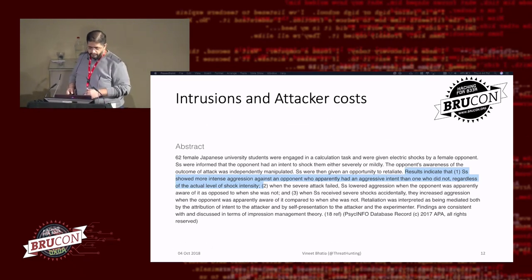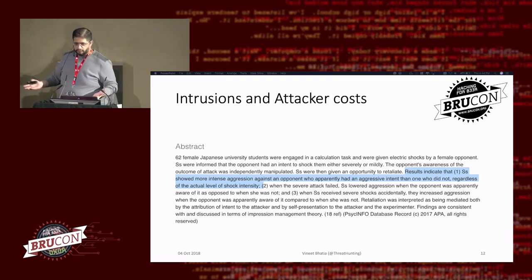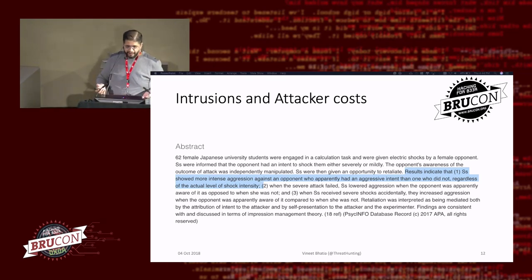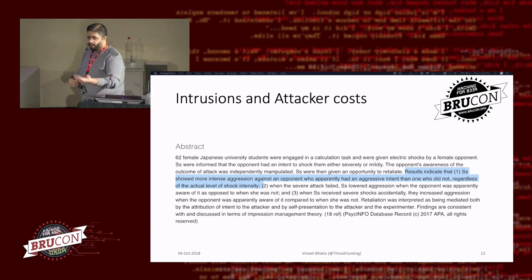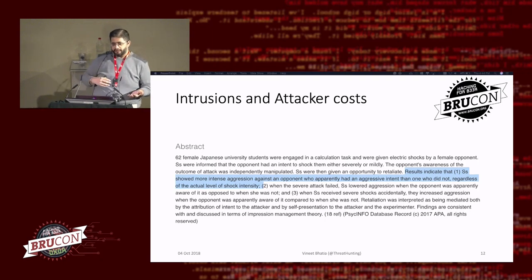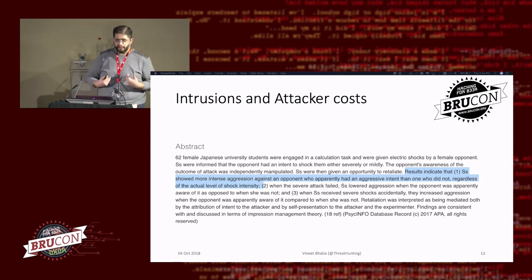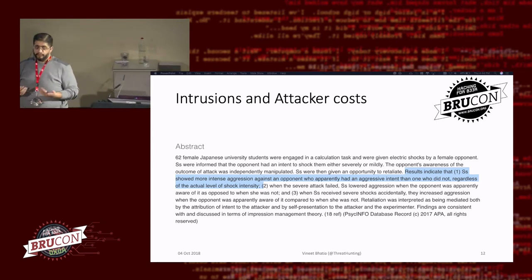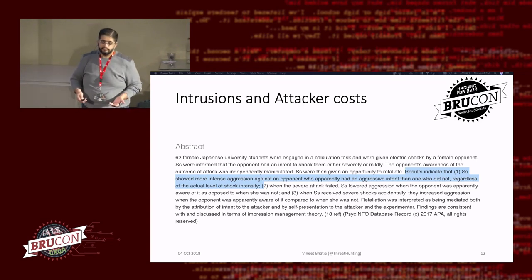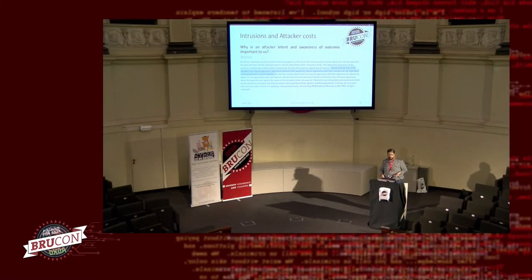There was a study with 62 Japanese females who were given electric shocks after questions were asked. What they were trying to determine is how a person receiving a shock would react differently based on whether they knew the right answer. The results indicated that subjects showed more intense aggression against an opponent who already had an aggressive intent than one who did not, regardless of the actual level of shock intensity. If somebody feels threatened on your network, they're going to react completely differently whether or not you're actually going to do something about them.